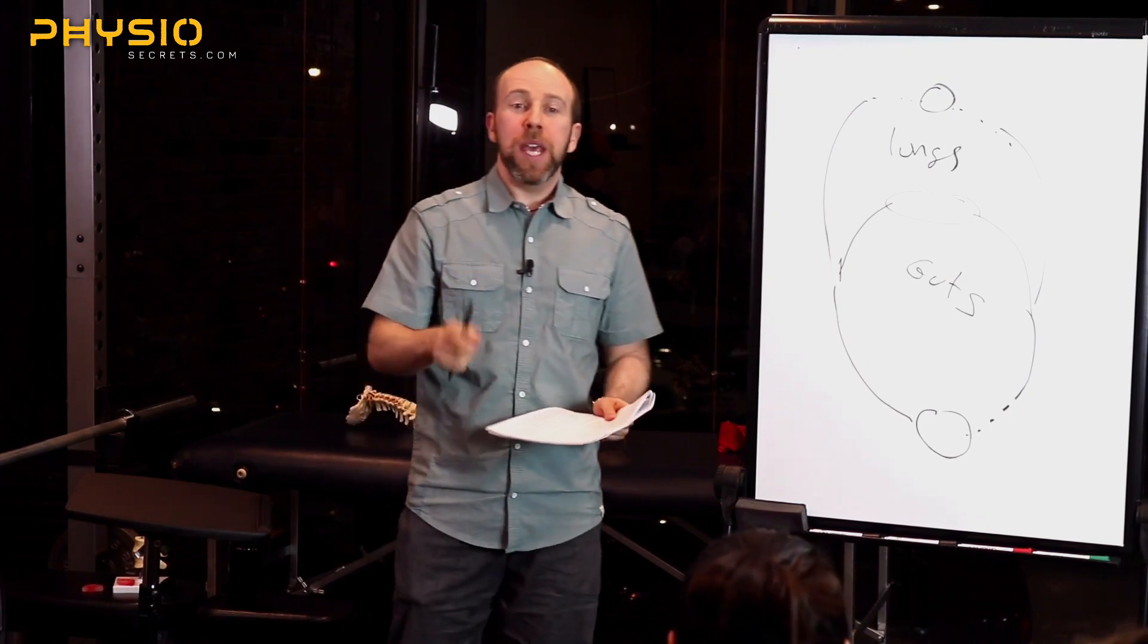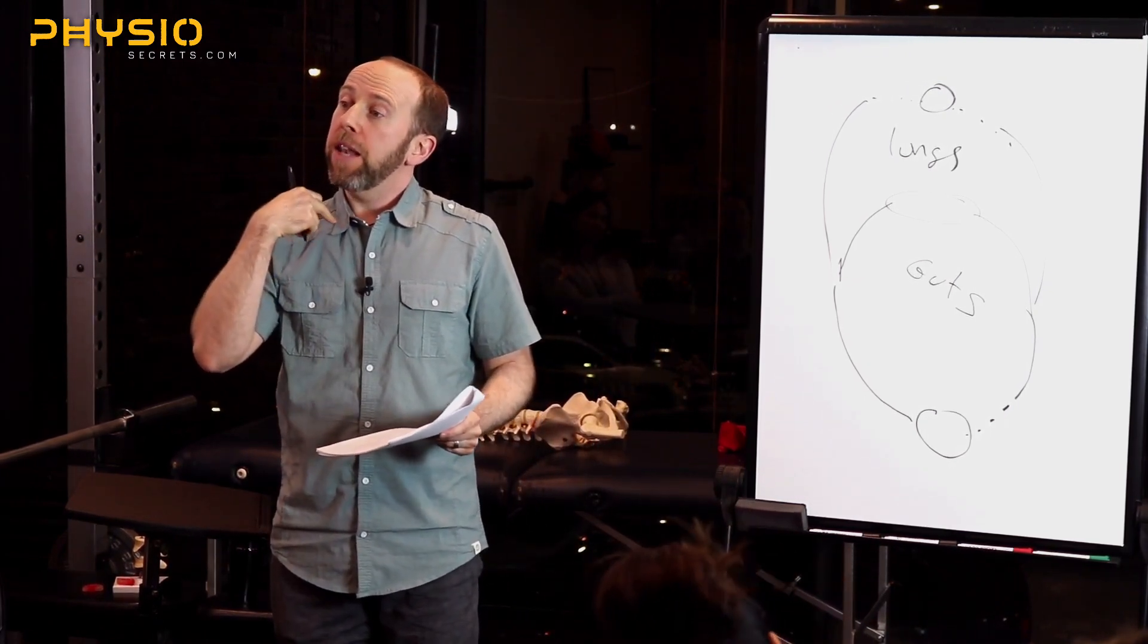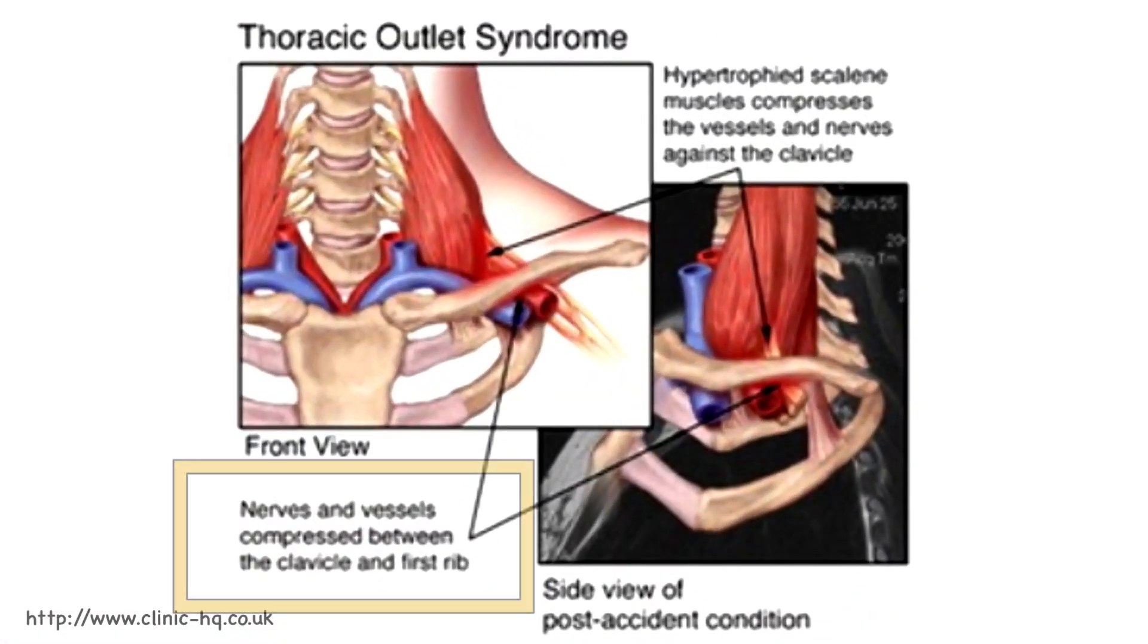The other thing that can cause it is that the brachial plexus runs underneath the clavicle. And the theory is the first rib is elevated and squishing the nerves as they run between the collarbone and the first rib. But I just told you the first rib doesn't move. But what does move? Collarbone.